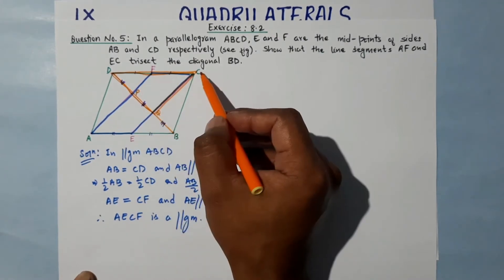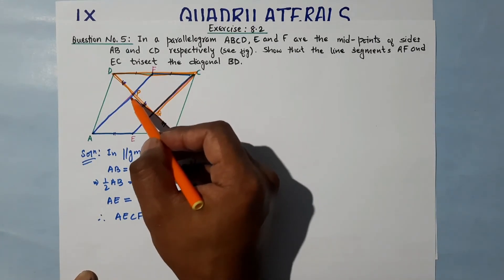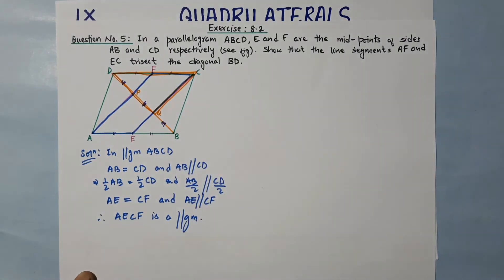...triangle DCQ. Why this triangle? Because F is a midpoint of DC, and this line is parallel, so P should also be the midpoint of DQ.